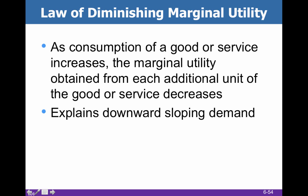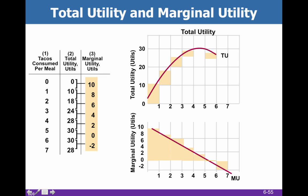The downward sloping demand curve is partially explained by the law of diminishing marginal utility. Basically, you enjoy the additional thing less than you enjoyed the initial thing. So the first donut you eat gives you more satisfaction than the second donut, which gives you more than the third.